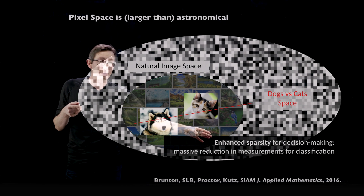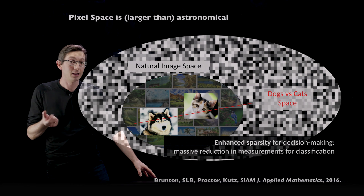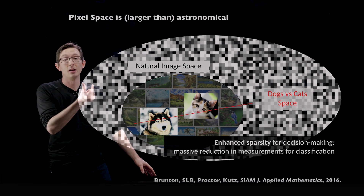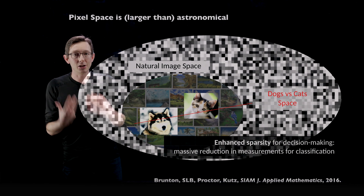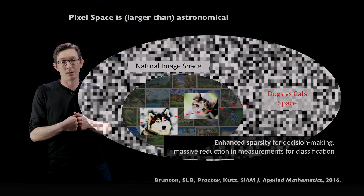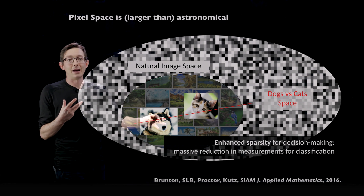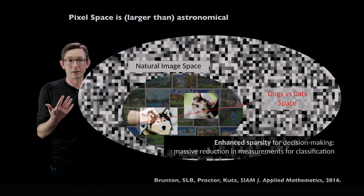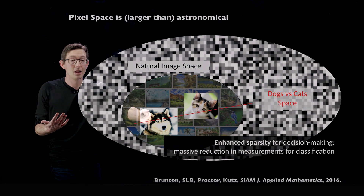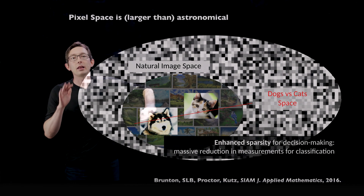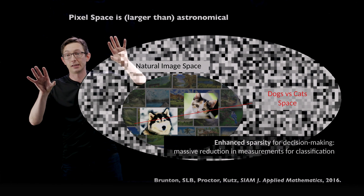This is what we call enhanced sparsity for decision making. The algorithm we introduced is called SPOC — Sparse Sensor Placement Optimization for Classification. It's based on the idea that if all you want is a classification, you can get away with many fewer sensors or pixels than if you wanted to reconstruct. I don't care if the picture of the dog is a bulldog or a Shih Tzu — that's perpendicular to this decision line. All I care about are the features that maximally tell me the difference between dogs and cats.